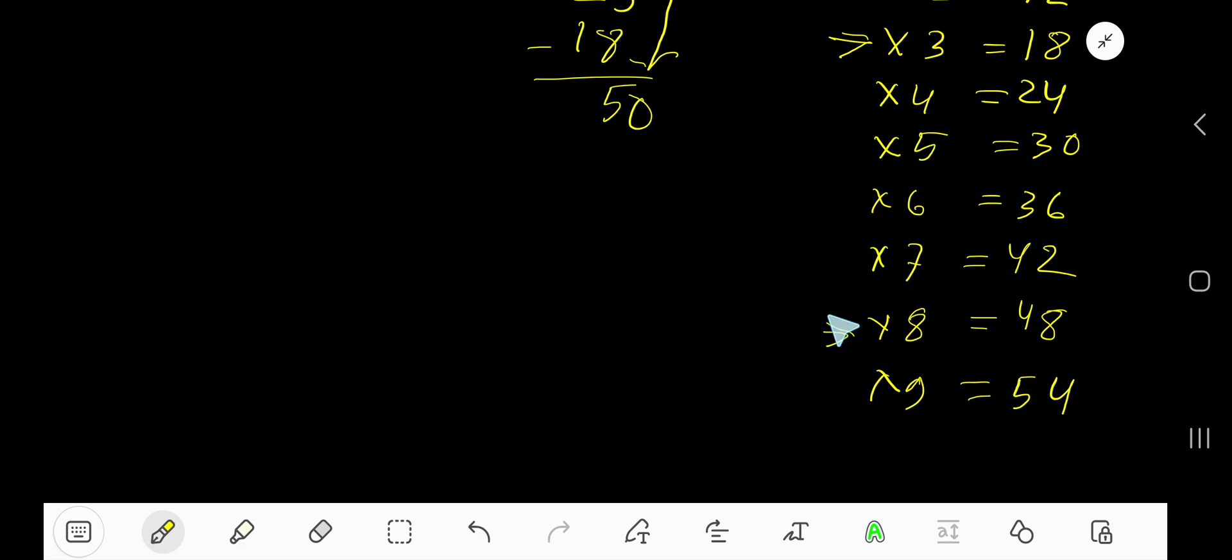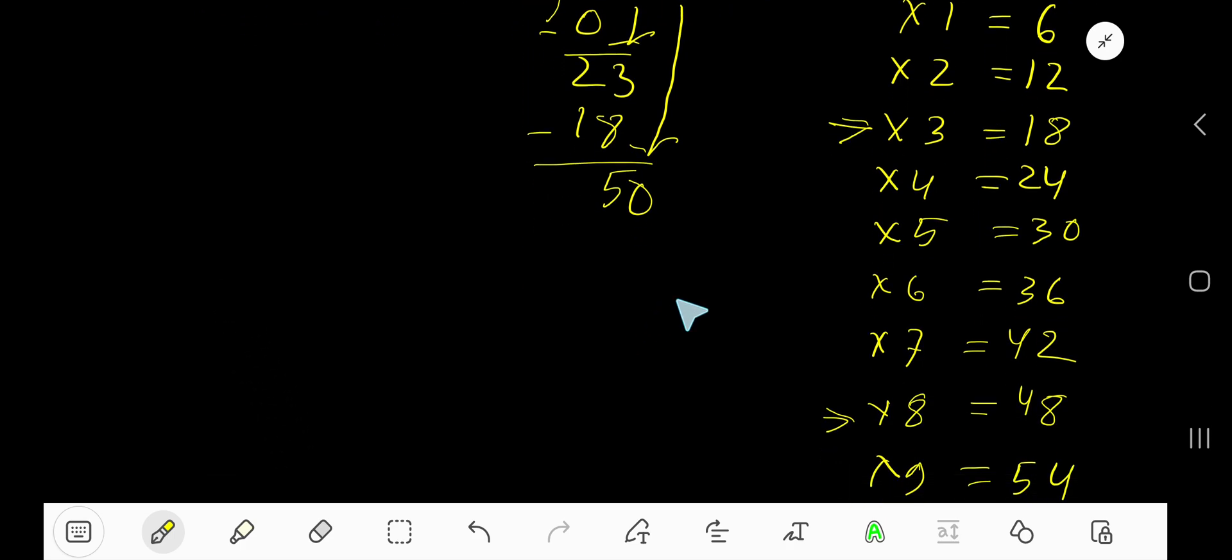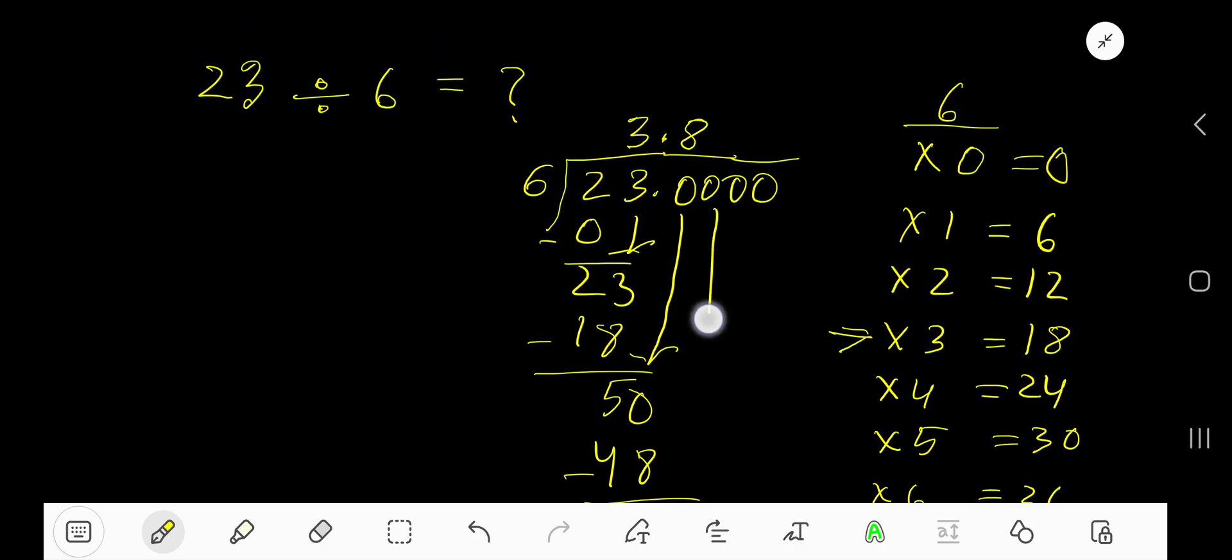We have 50, so stop here. 8 times. 8 times 6 is 48. Subtract to get 2, bring down the next 0.